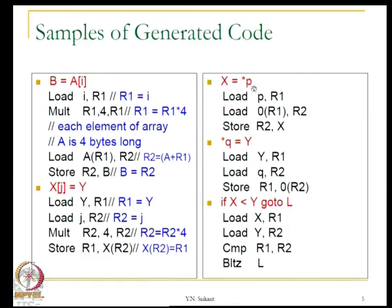For x = *p: load p into R1, then using indirect addressing 0(R1) means contents of the address in R1 go to R2, and we store R2 to x. *q = y is similar: load y into R1, load q into R2, and store R1 to 0(R2) — this is the indirect mode of addressing. If x < y goto L: load x into R1, load y into R2, compare R1 and R2, and branch on less-than to L.